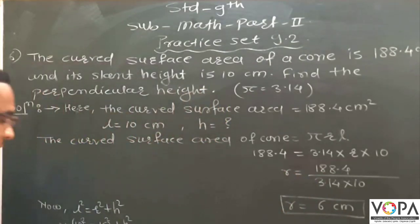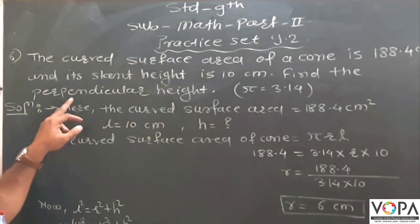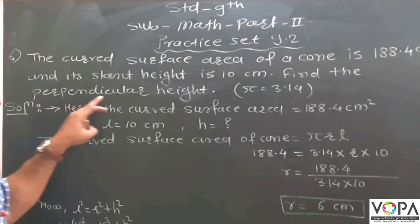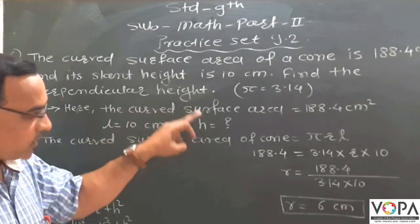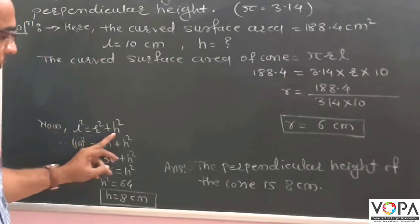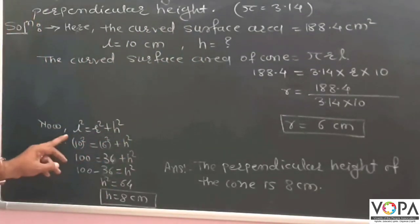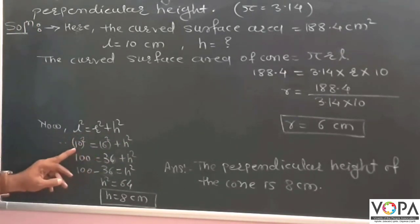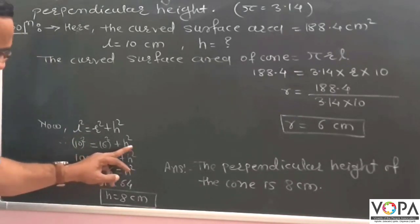Then in this problem, to find the perpendicular height, that is h, therefore l² is equal to r² plus h². Now put the value of l, r in this formula, then 10² is equal to 6² plus h².